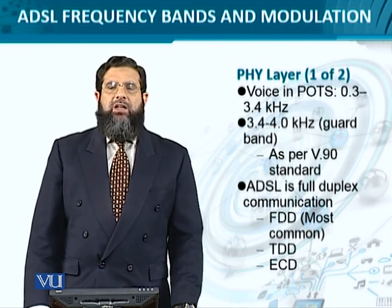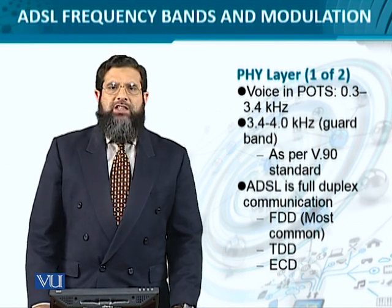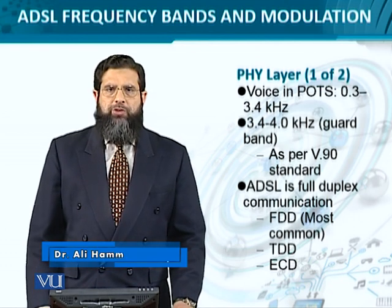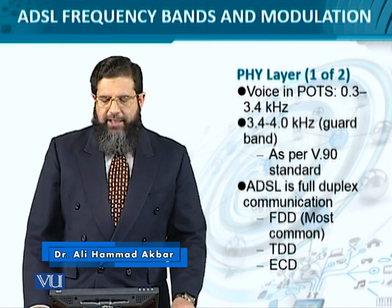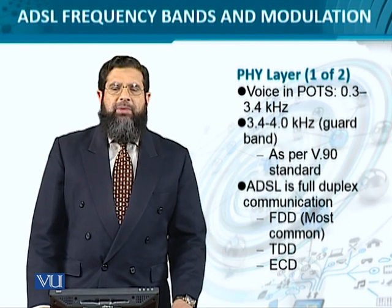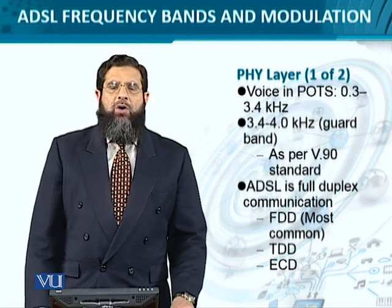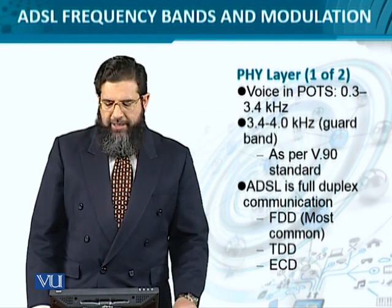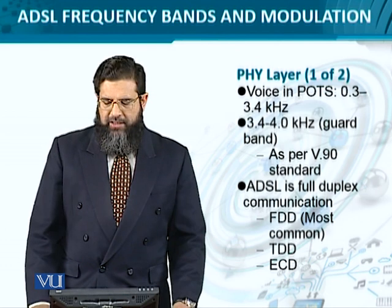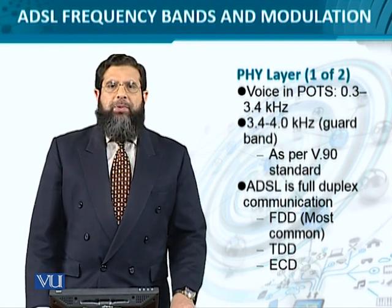The physical layer needs to be understood in conjunction with voice. Telephone lines are primarily meant for voice, which is band-limited to 300 Hz to 3.4–3.5 kHz. This gives us some room, since the frequency band for voice is limited to an upper boundary of 4 kHz. The frequency range between 3.4 and 4 kHz serves as the guard band, according to modem specifications — specifically V.90 — to provide internet connectivity.